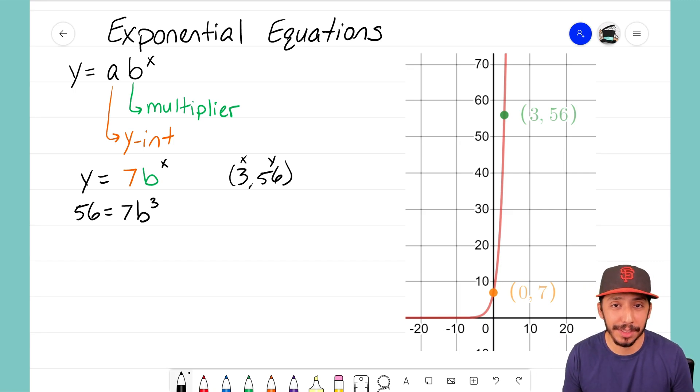So do you see that I have an equation now with one variable - it's B, our multiplier, and now I can solve this problem. I want to solve it for B. So to do that I'm gonna go ahead and take both sides and I'm gonna divide both sides by 7 because I want B by itself.